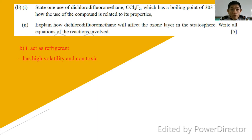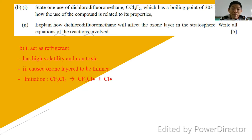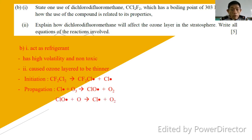Part two: explain how dichlorodifluoromethane affects the ozone layer in the stratosphere using suitable equations. CCl2F2 depletes the ozone layer. The initiation step involves formation of a chlorine radical under ultraviolet light. In the propagation steps, the chlorine radical attacks ozone to form a ClO radical and oxygen; the ClO radical then reacts with an oxygen atom to regenerate the chlorine radical. The overall equation is: O3 + O → 2O2.